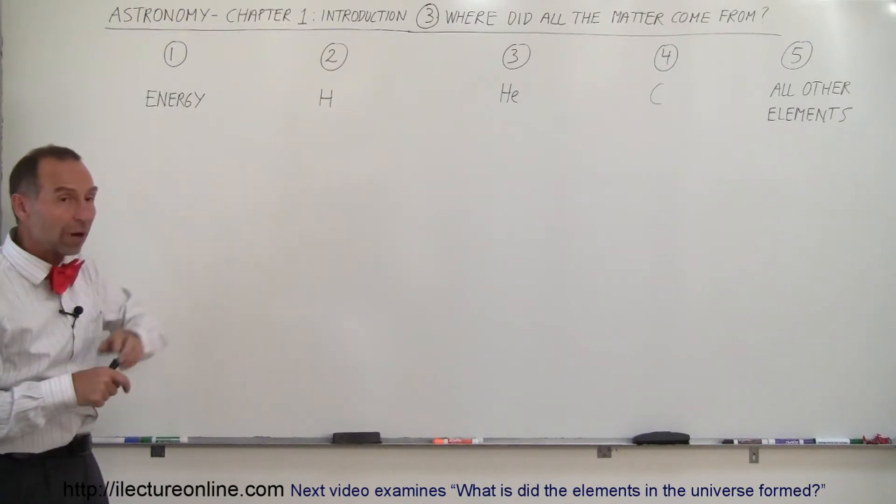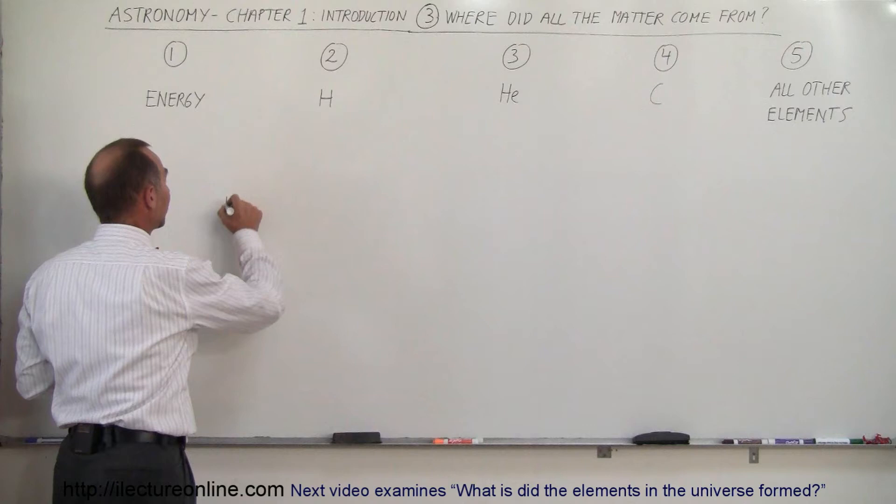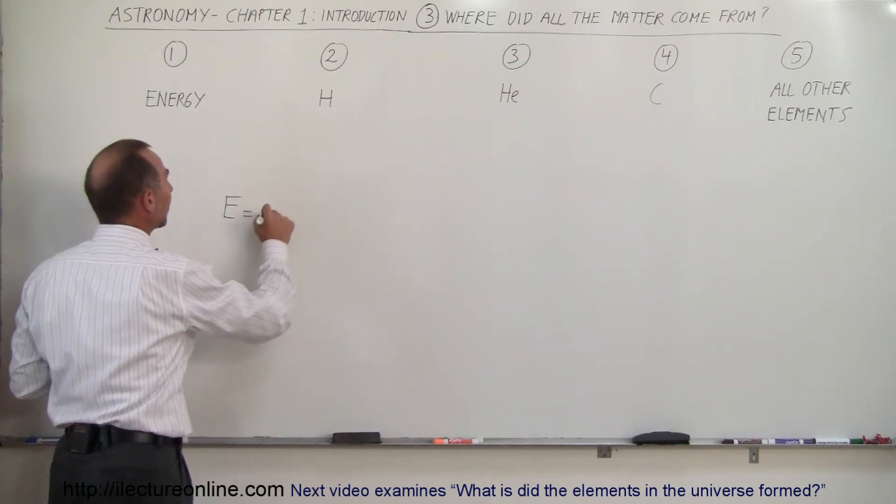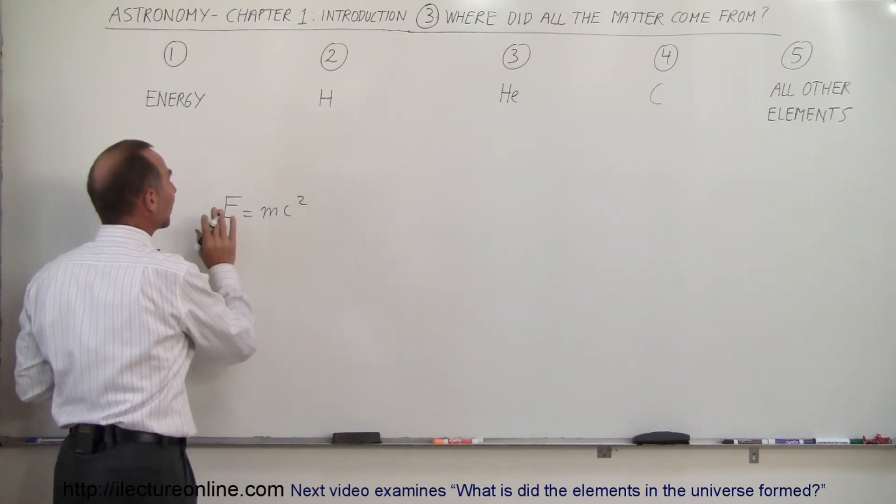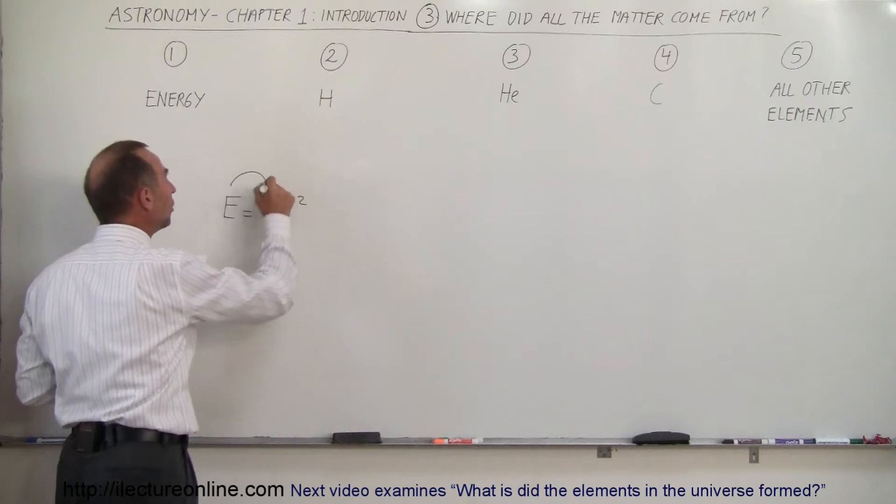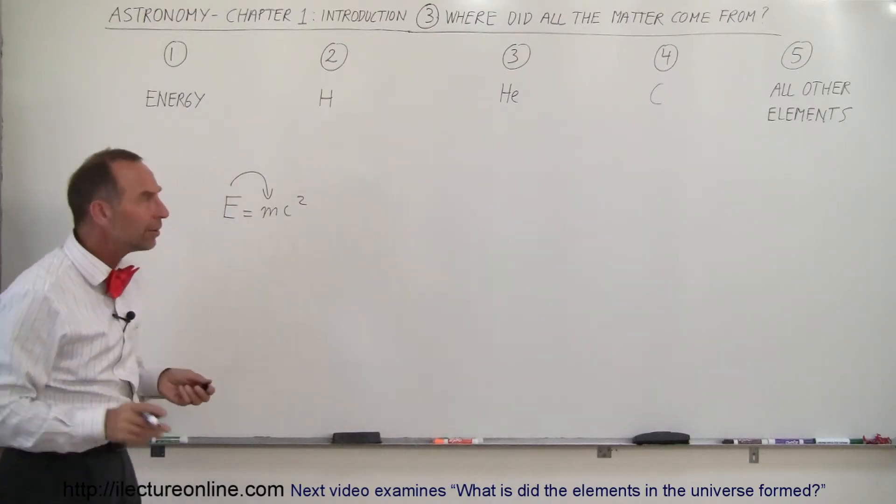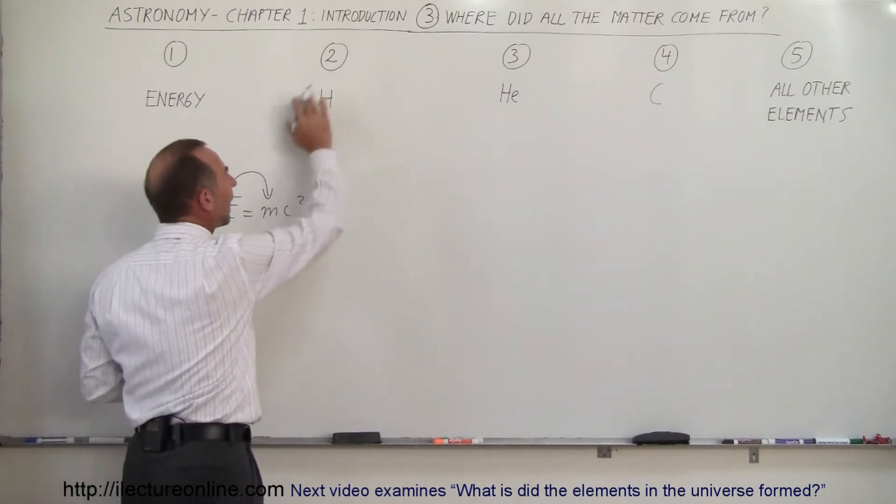But it turns out that this process, the process that's dictated by E equals MC squared, caused that energy to turn into matter. What kind of matter? Mostly hydrogen.